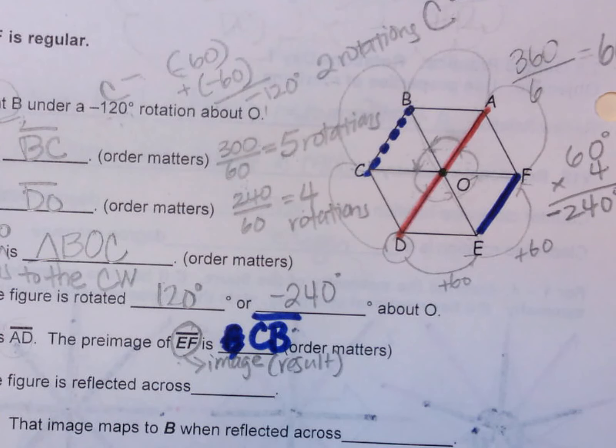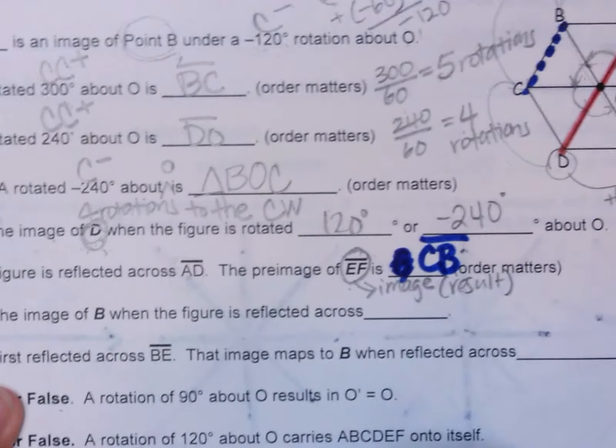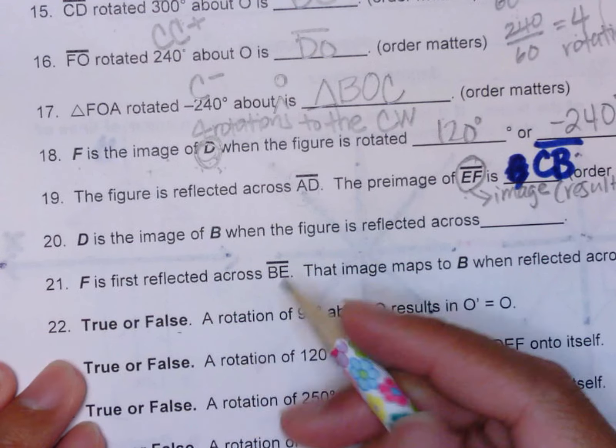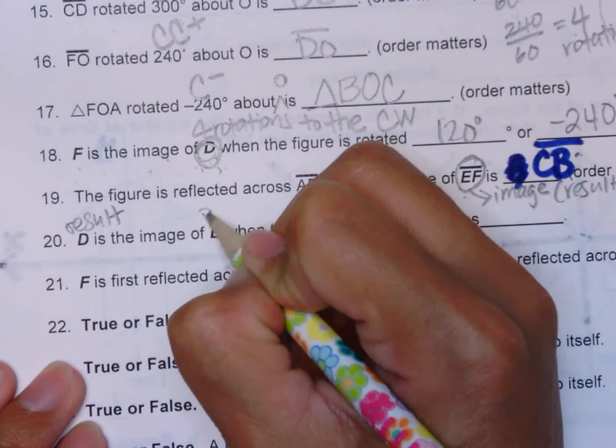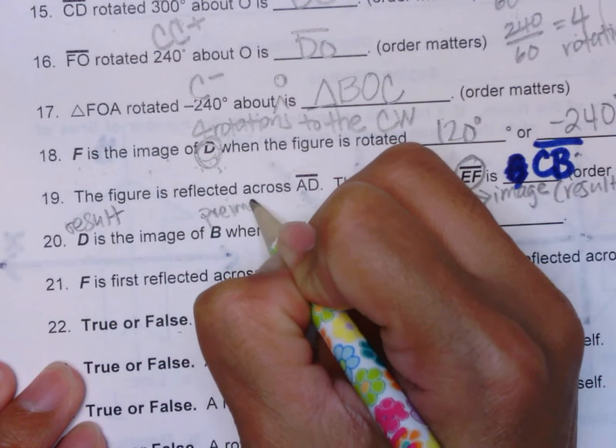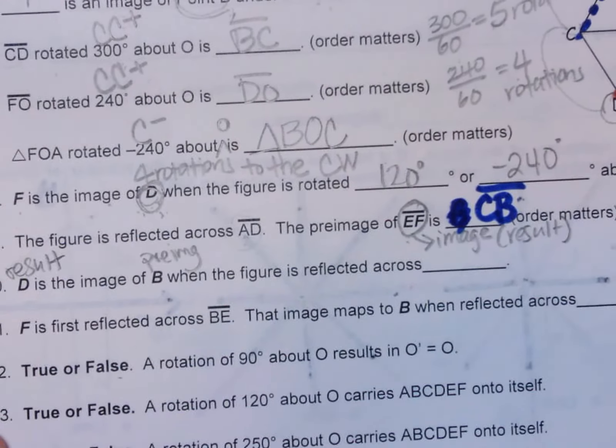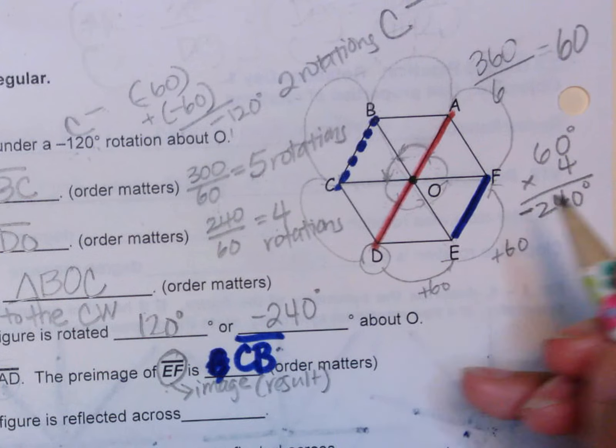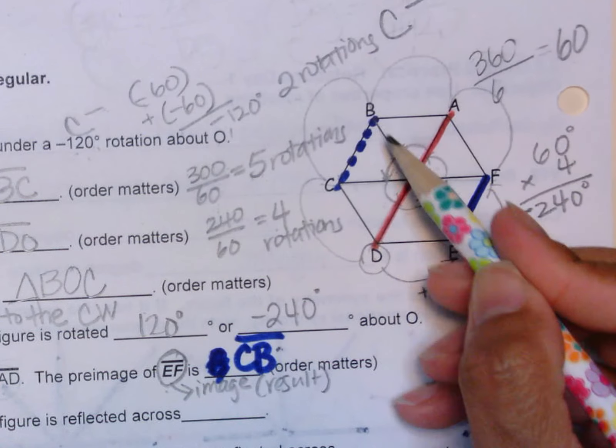Moving on, we have number 20. D is the image of B when reflected across what? Let's identify something. You have to be able to know what you're talking about. D is the image, so D is the result, and B is the pre-image. Looking at our diagram right here, D is the result and B is the pre-image.